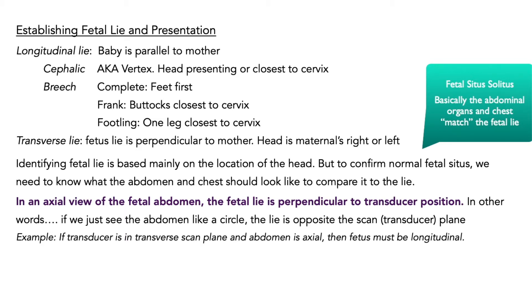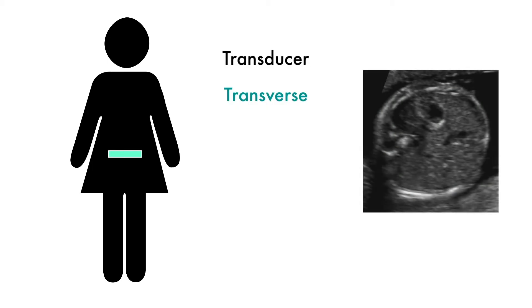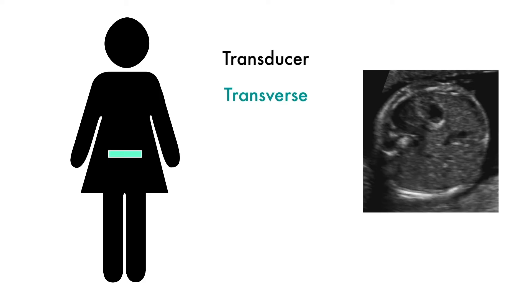Let's illustrate that. Here we have our mom. Let's say our transducer is in the transverse position — here's our probe, it's in transverse. On our screen we see the axial view of the abdomen. Here we have our stomach, it's nice and round. We just said that in this view the probe is perpendicular to the axis of the fetus. That means the baby's lie is opposite the transducer orientation. So if our transducer is in transverse and the baby looks like a circle, the baby is lying longitudinal.